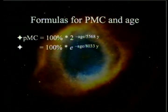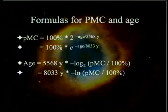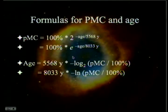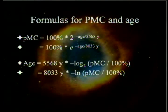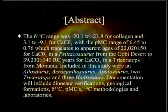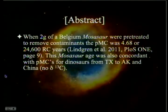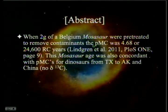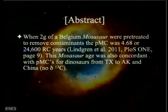For those who like math, here are some formulas — for those who don't, close your eyes, it'll be over in 30 seconds. The mean age is convenient because you can use it with natural log; using the scientific calculator on an iPhone you can do these calculations yourself. Previously, two grams of a Belgian mosasaur were pretreated to remove contaminants, and the percent modern carbon was 4.68. This one's actually in the peer-reviewed literature in PLOS ONE. The mosasaur age was concordant with percent modern carbons for their dinosaurs.